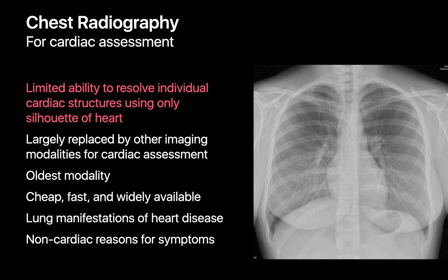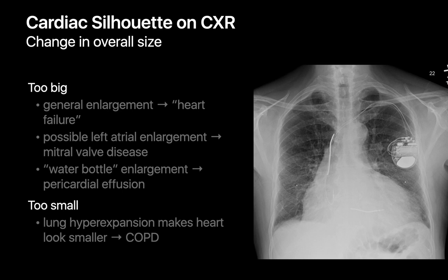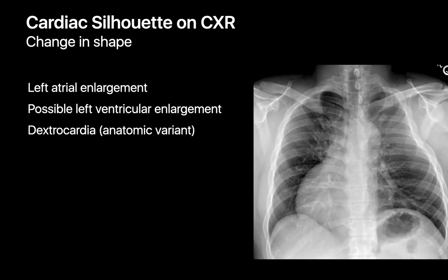The chest radiograph may clue us in that a cardiac issue is present when the density of the cardiac shadow is abnormal, like in the presence of cardiac calcification. Old MIs, valvular disease, coronary artery disease, and remote inflammatory pericardial disease can sometimes present with characteristic calcification patterns visible on a chest radiograph. Changes in the overall size of the cardiac shadow, especially when it looks bigger than usual, can indicate poor cardiac function, mitral valvular disease, or a pericardial effusion. Changes in the shape of the cardiac silhouette can prompt us to more closely investigate left atrial enlargement, left ventricular enlargement, or congenital anatomic variants.